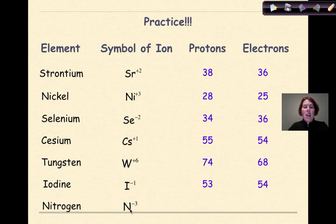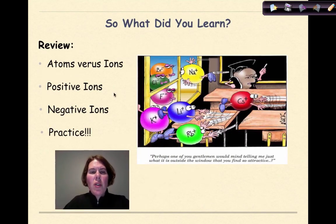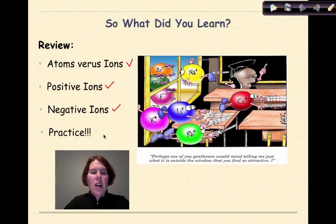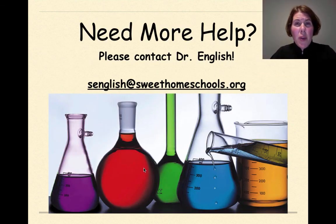And finally, nitrogen: atomic number is 7, it's a minus 3 charge, therefore the number of electrons is 10. Hopefully you got those right. So what did you learn? We went over atoms versus ions, we talked about positive ions and how to figure those out, negative ions and how to figure those out, and we did some practice. Need more help? Feel free to contact me. Have a great day.